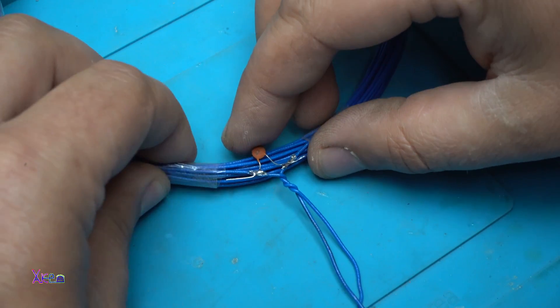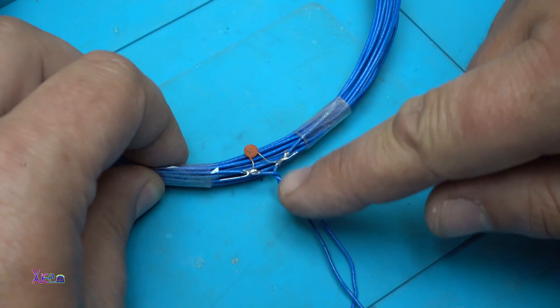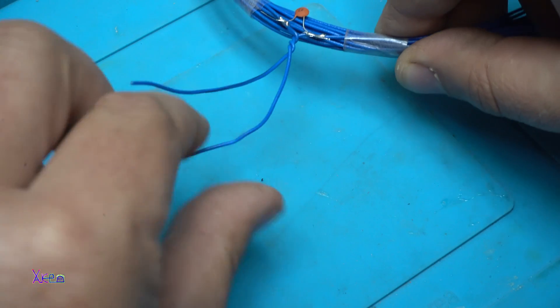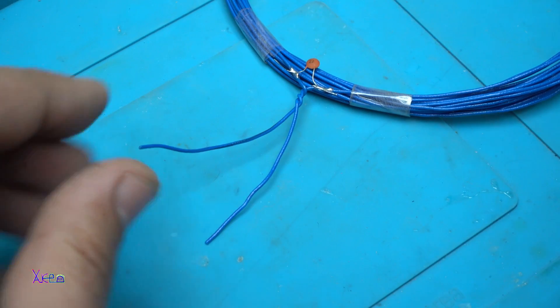Now the capacitor is soldered on the wires of the coil and on the end of the wires I'm gonna place two alligator clips.